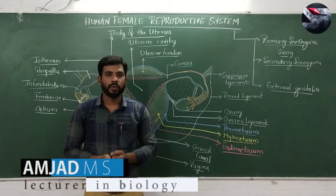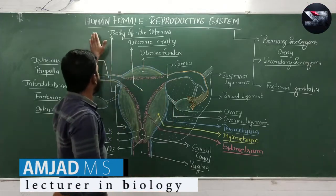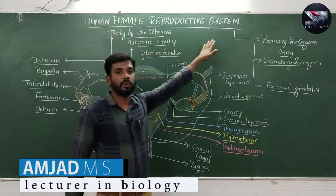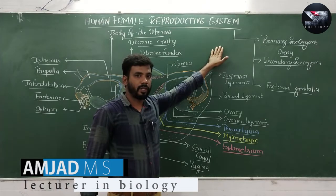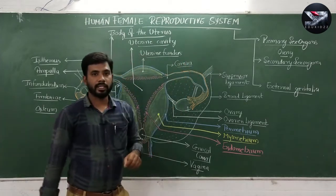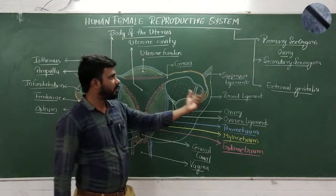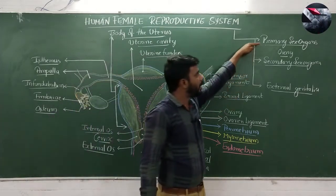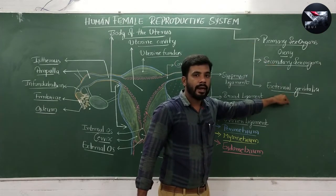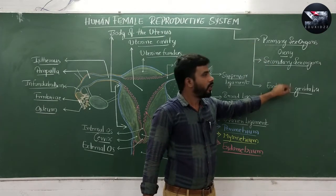Hello students. Today in this lecture I am going to explain the human female reproductive system. Just like the male reproductive system, the female reproductive system also includes primary sex organs, secondary sex organs, and external genitalia.